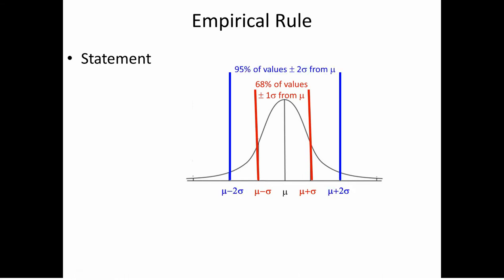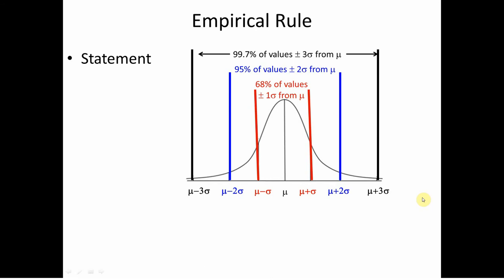If we look at two standard deviations, 95% of the population has values within two standard deviations of the mean. And if we go to three standard deviations, it's 99.7% — so practically all of the population lies within three standard deviations of the mean.